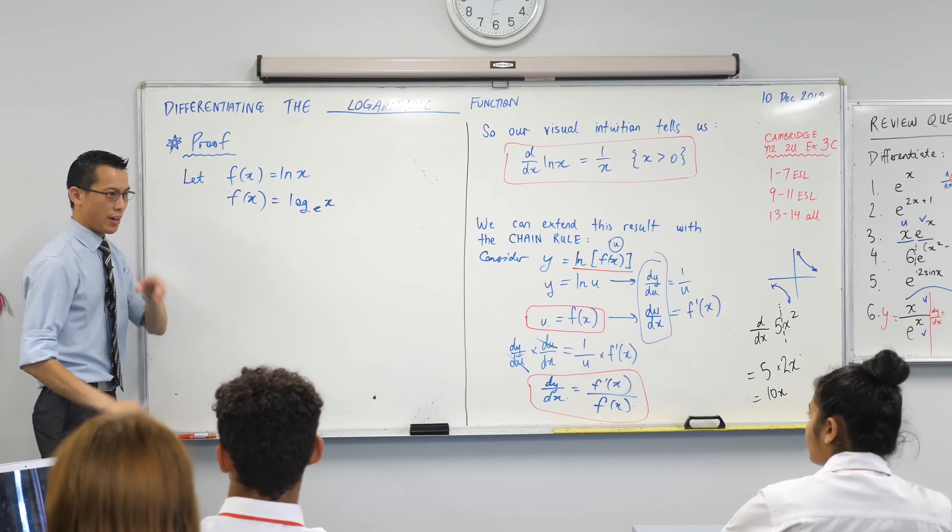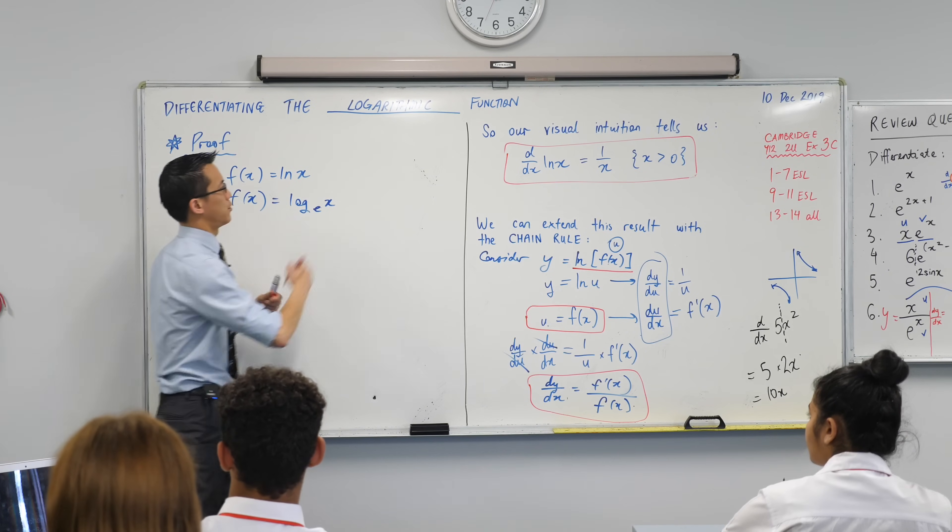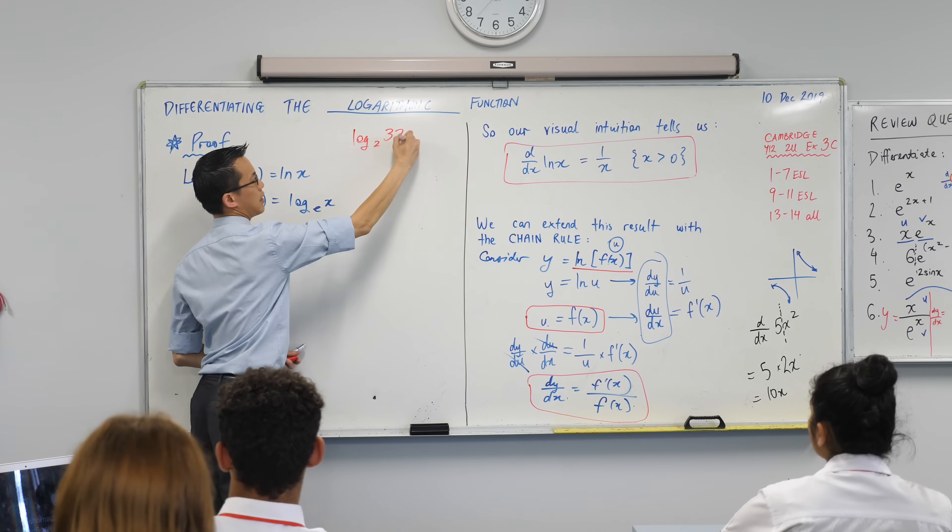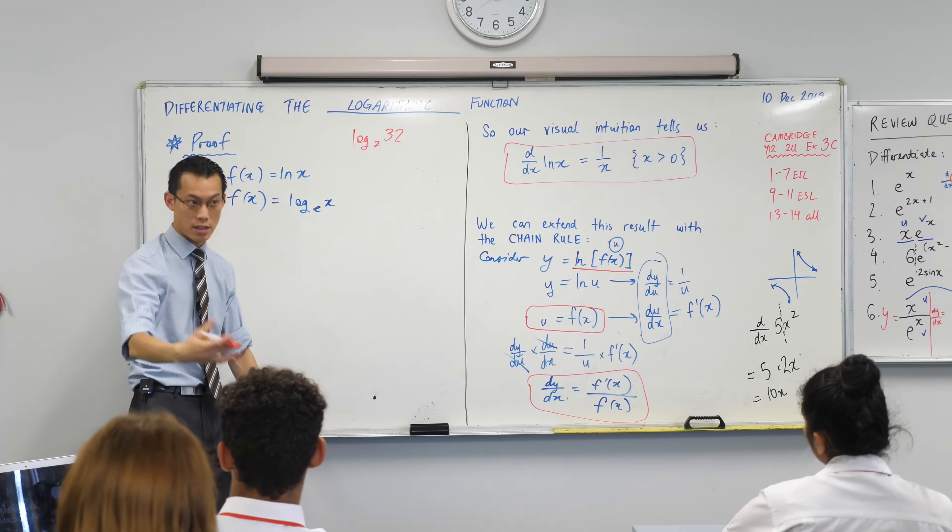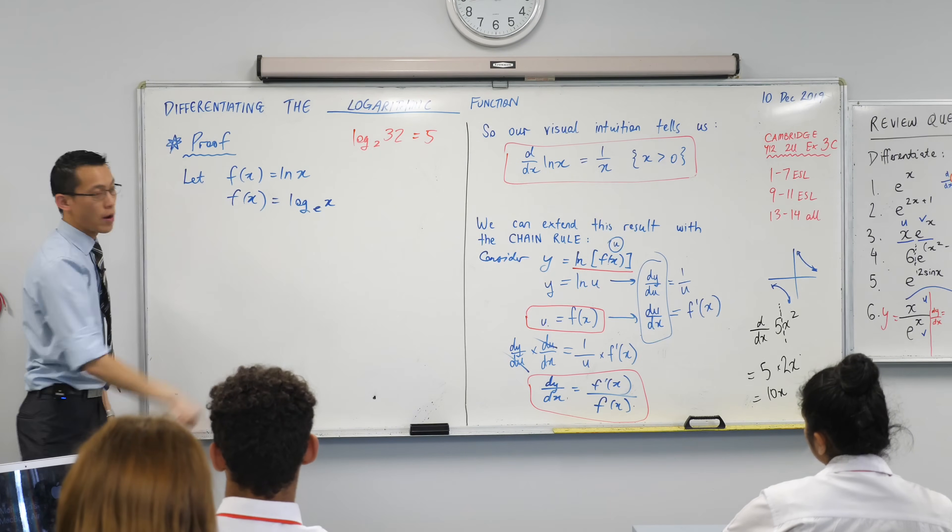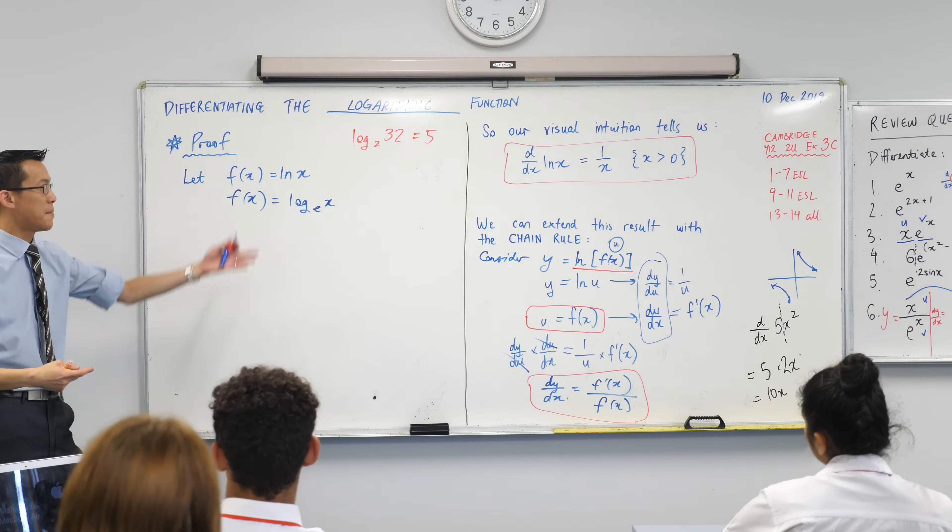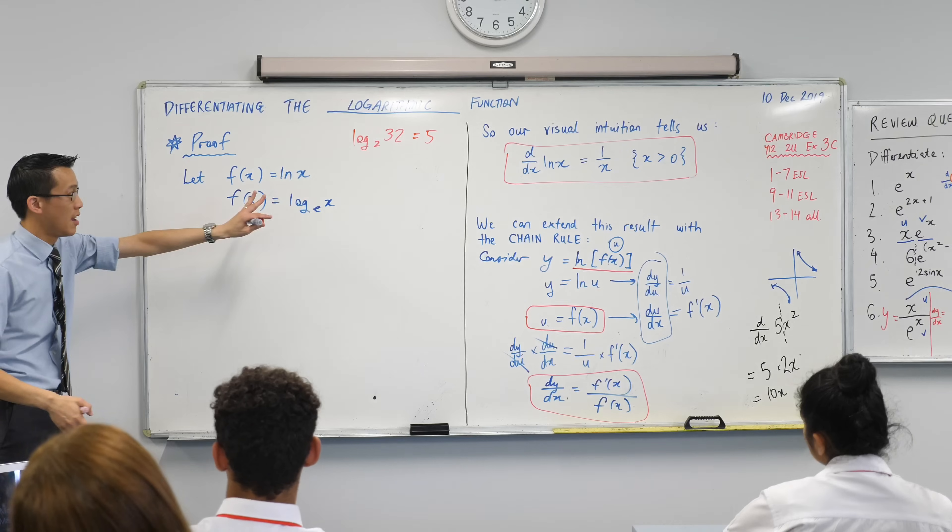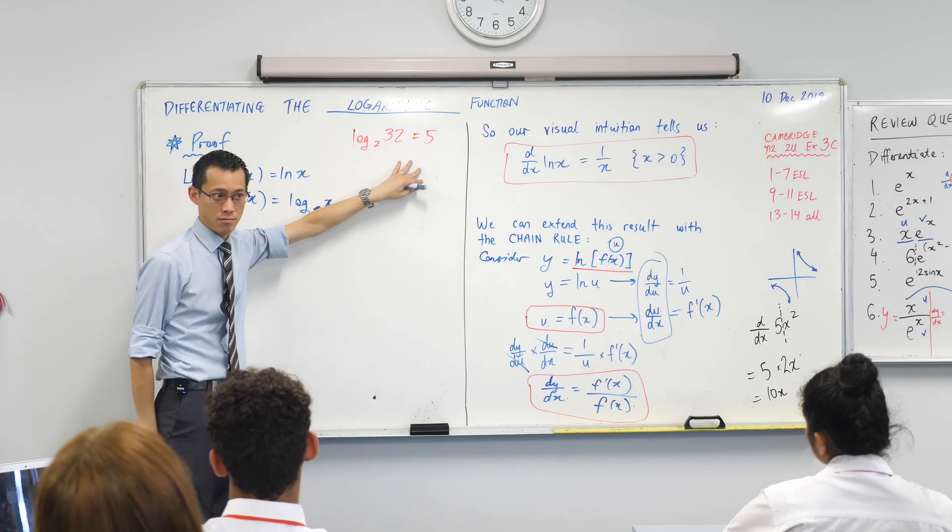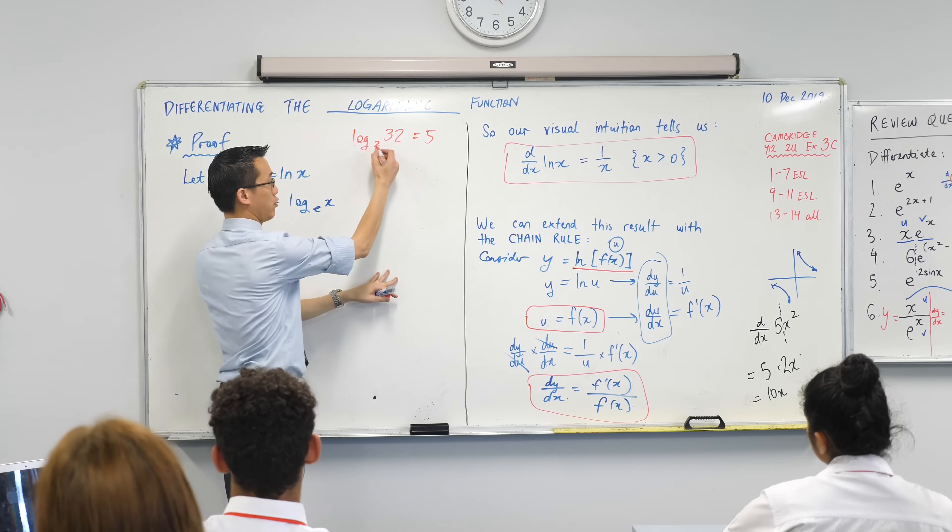Let me give you a quick example just to get there. If I said log base 2 of 32, if I asked you to evaluate that with your calculator, it would tell you 5. That's a log equation. Can you help me rewrite this log equation as an exponential equation?